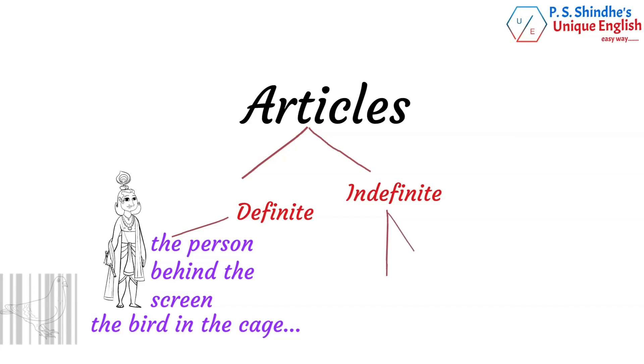Next up, we have the indefinite articles 'a' and 'an'. A is used before nouns that start with consonants, such as a book, while an is used before nouns that start with vowels, such as an elephant.